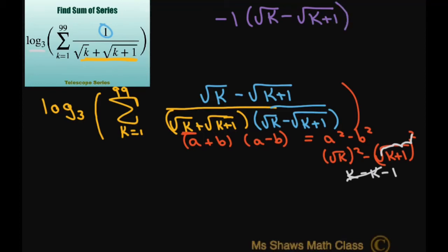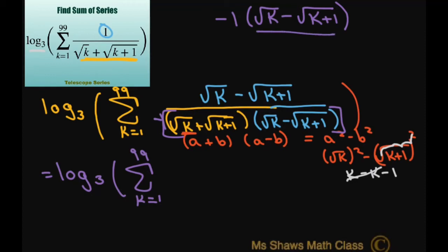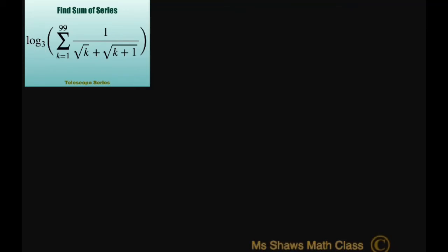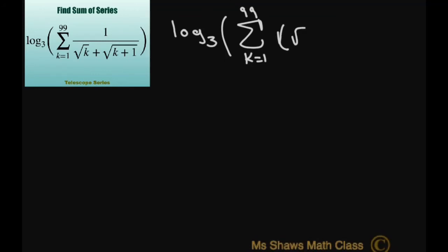Since the whole denominator is just negative 1, I can flip the numerator terms around. So I can write this as log base 3 times the sum from k equals 1 to 99 of square root of k plus 1 minus square root of k.